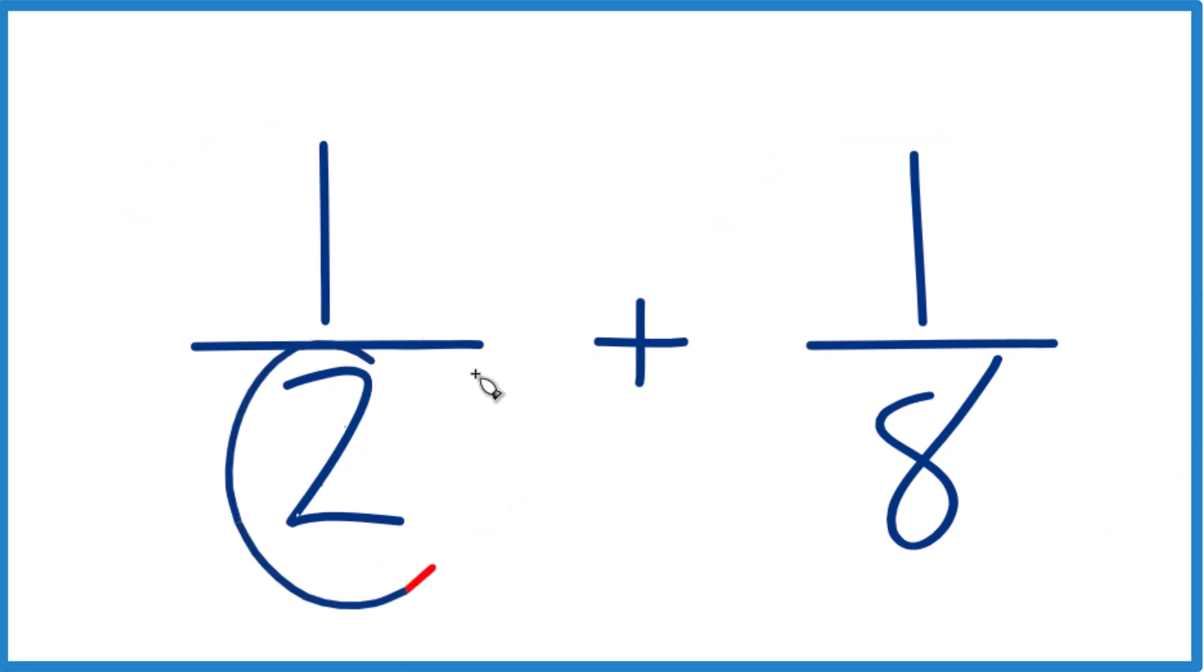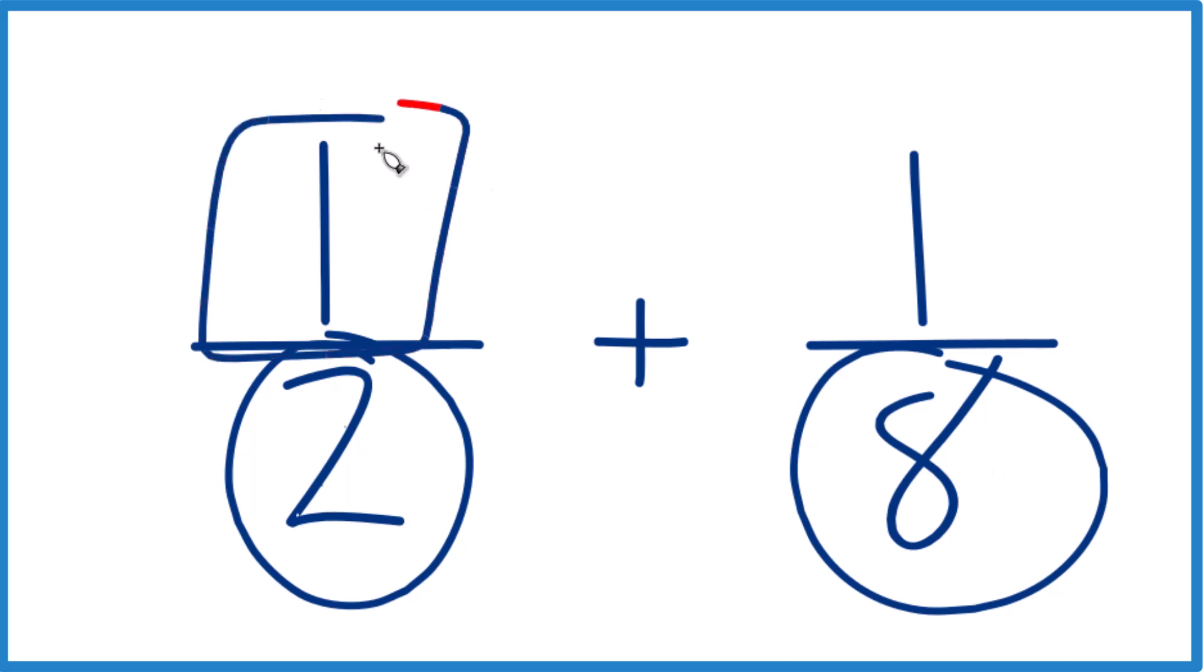What we need to do is get our denominator to be the same. We need a common denominator. Because then we can just take the numerators here, add those together, and we're done.